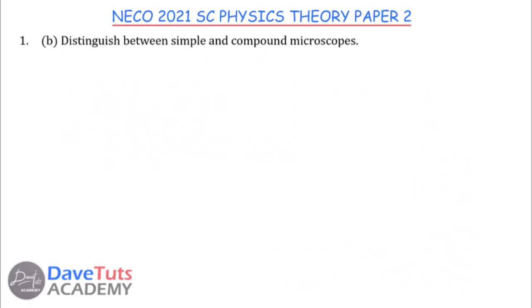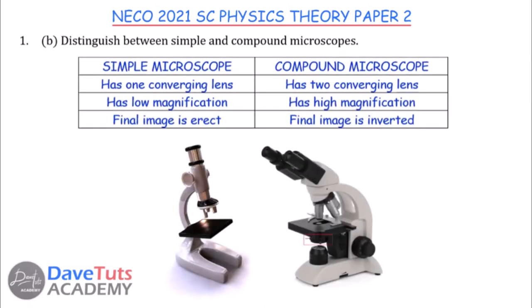This question asks us to distinguish between simple and compound microscopes. In a simple microscope, we have only one converging lens, as opposed to two converging lenses in the compound microscope. The simple microscope has low magnification, whereas the compound microscope has very high magnification. In the simple microscope, the final image is erect, whereas in the compound microscope the final image is inverted. Pick any two of these distinctions for full marks.